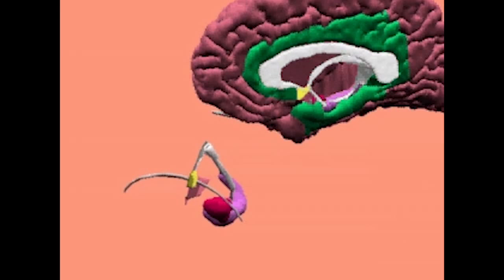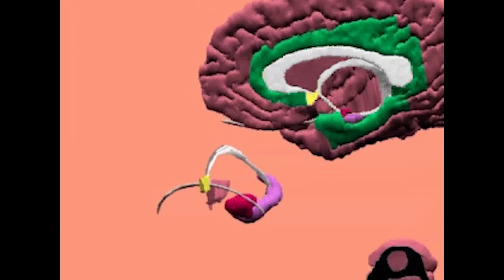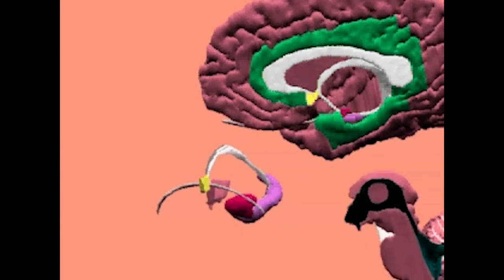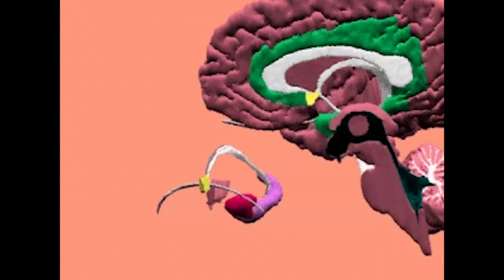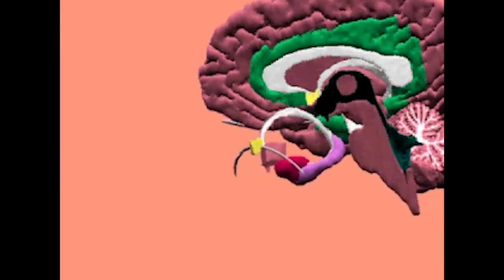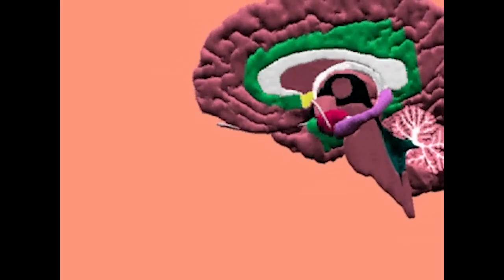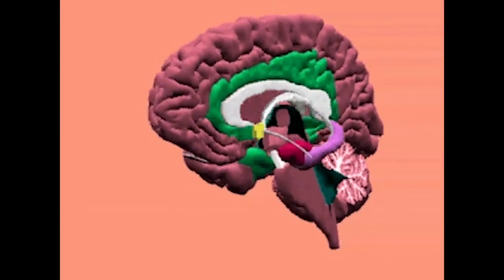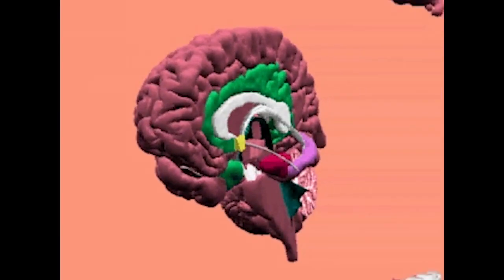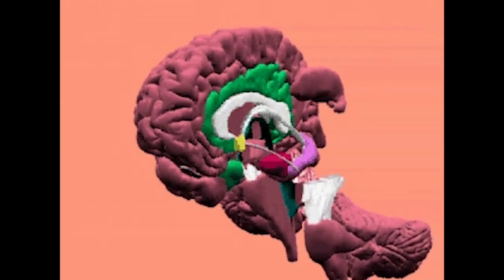Let's put this back together for a moment. We can add the brain stem, put the hippocampus back in, and add the thalamus and brain stem. And now you can see the structures that we're going to be talking about today.